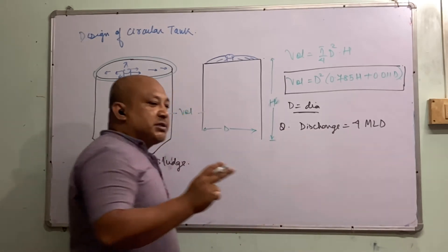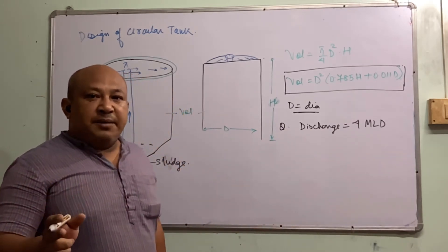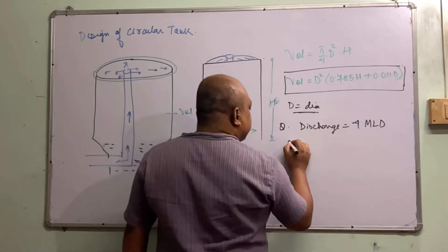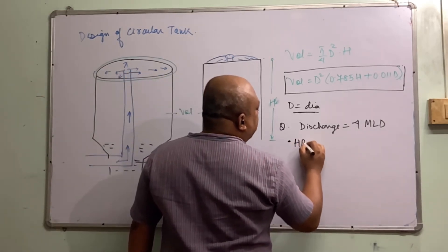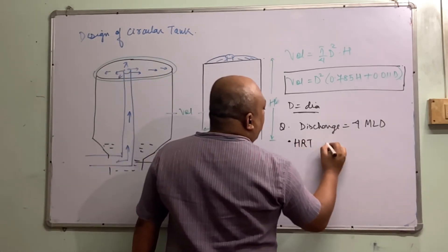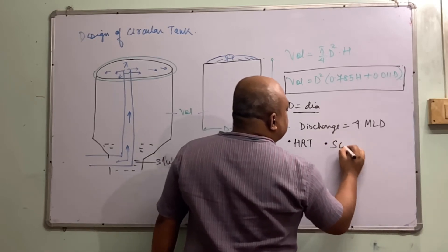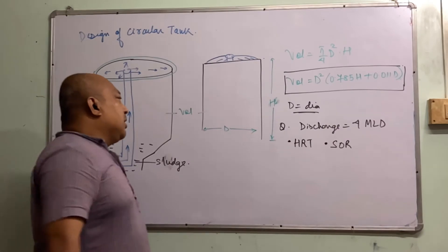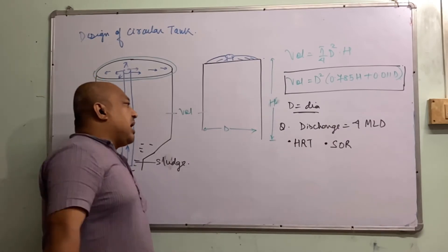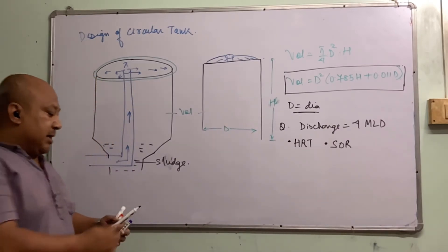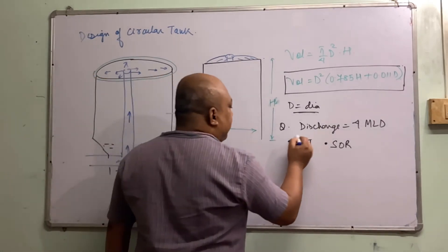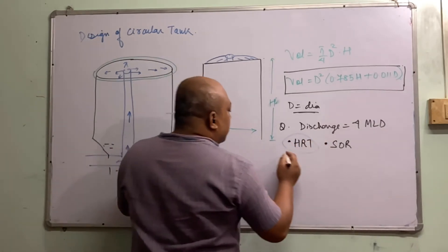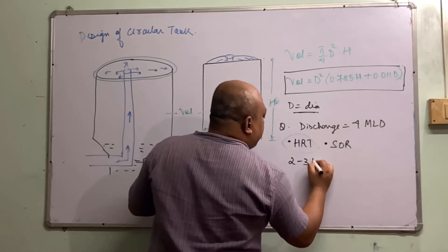The design always comes in two parts — the operational parameters. One is the hydraulic retention time, and the other is the settling velocity or surface overflow rate. Always remember: the design is based on HRT or SOR. HRT is the main criterion and we keep it around 2 to 3 hours.